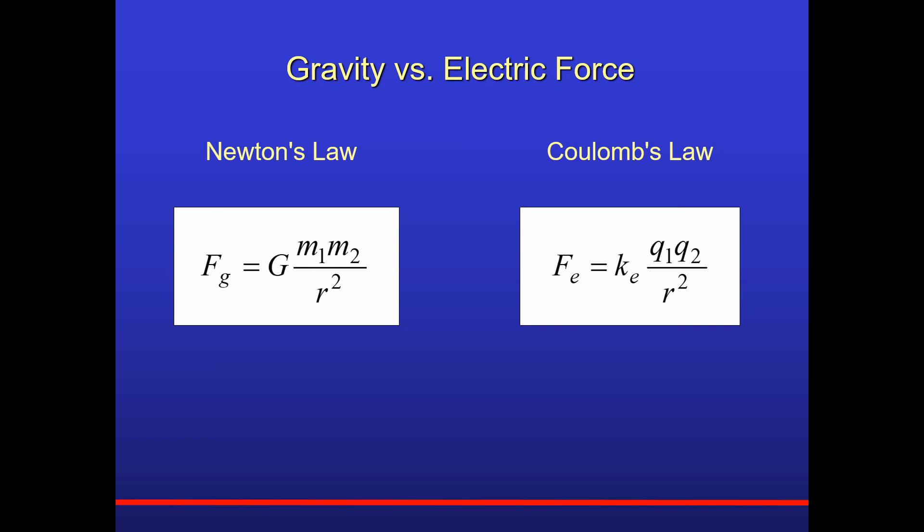But what about the two constants? The gravitational constant is extremely small, 6.67 times 10 to the minus 11. Therefore, to have a significant gravitational force, you must have some very large mass involved, such as the earth, or the moon, or the sun.